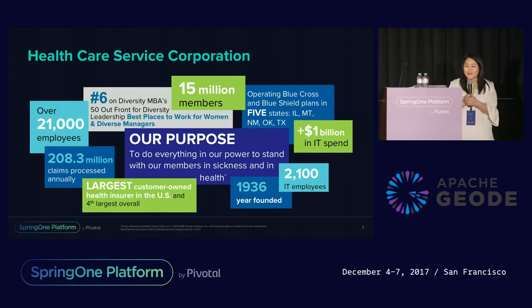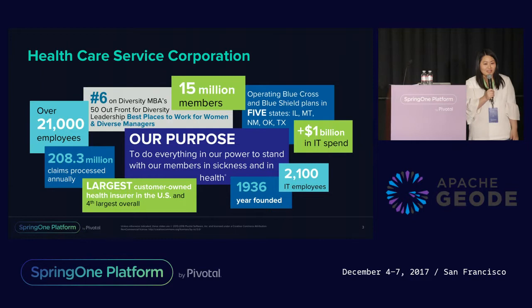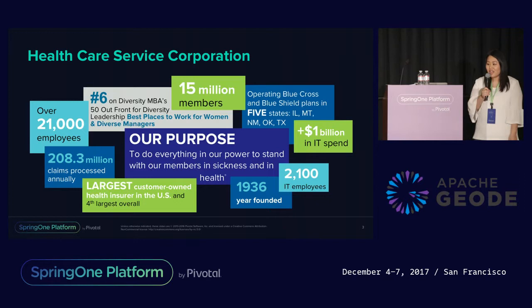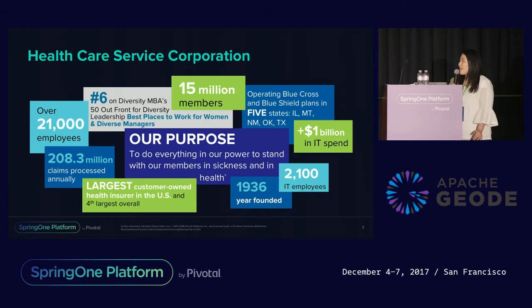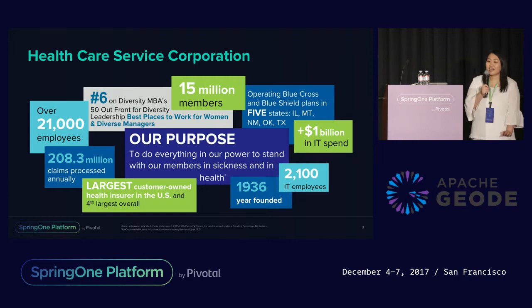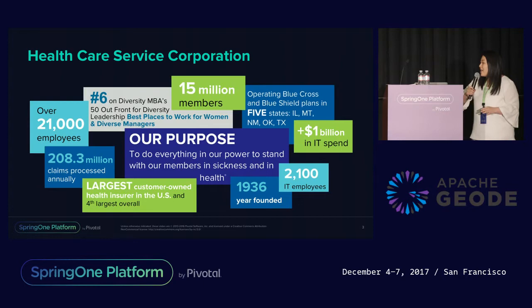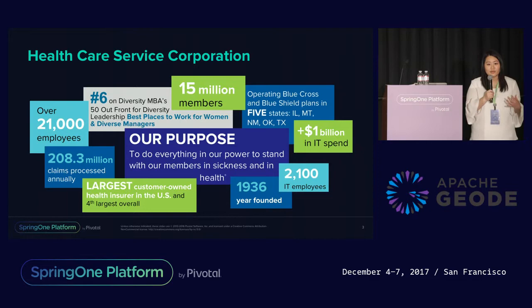Hi, my name is Anna Zhang and I'm a developer at HCSC. Healthcare Services Corporation is a health insurance company that offers a variety of health and life insurance products and related services. HCSC is the largest customer-owned health insurer in the U.S. and the fourth largest health insurer overall. HCSC operates Blue Cross and Blue Shield plans in five states — Illinois, Montana, New Mexico, Oklahoma, and Texas — with over 15 million members and 21,000 employees. HCSC is over 80 years old and recently adopted test-driven development, pair programming, and agile methodology to provide a more efficient experience for our customers.